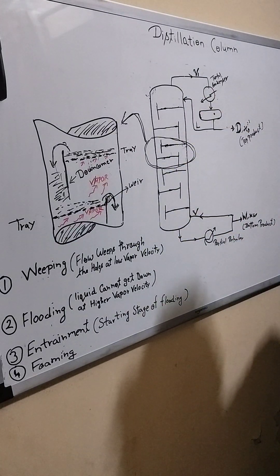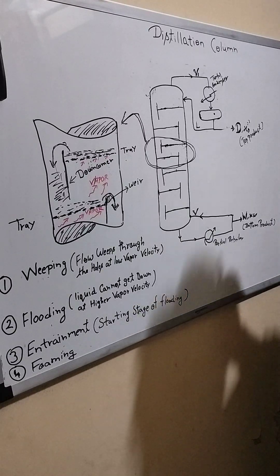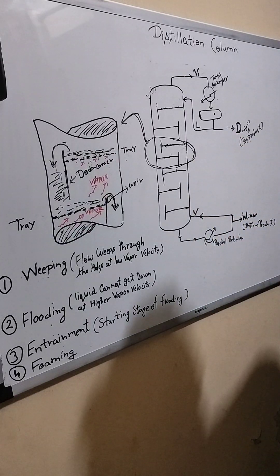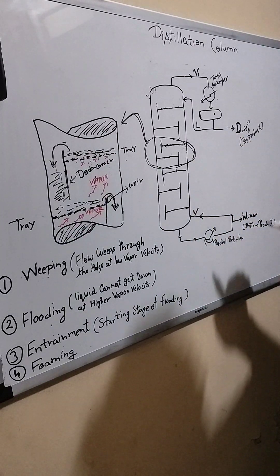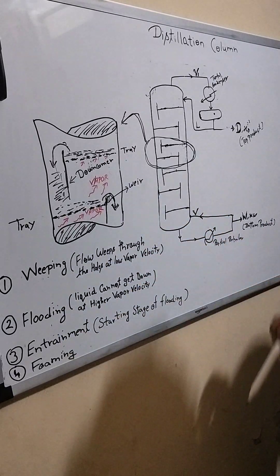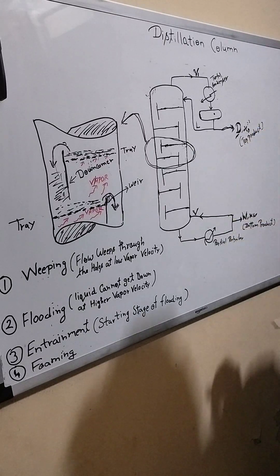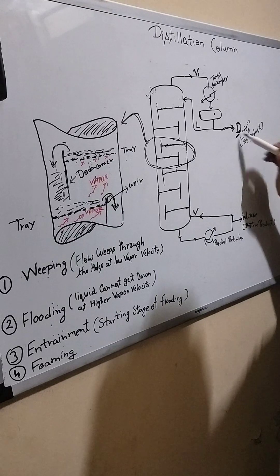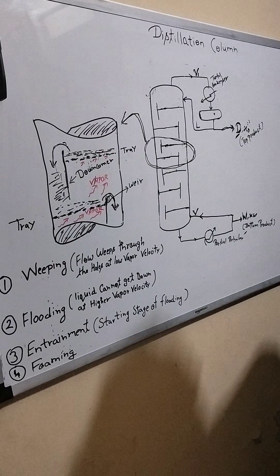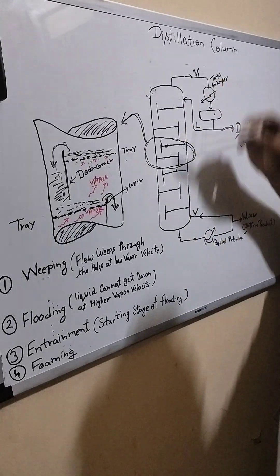When your column is running normal, then no problem. You will get the desired separation. But when these four problems come, your purity of the product may change in top products and also in bottom products. This is the common problem which generally comes in chemical industries during the running of this distillation column.